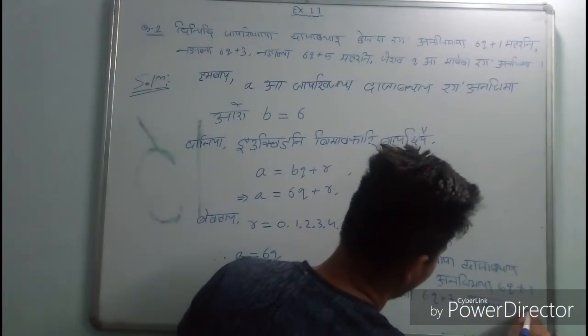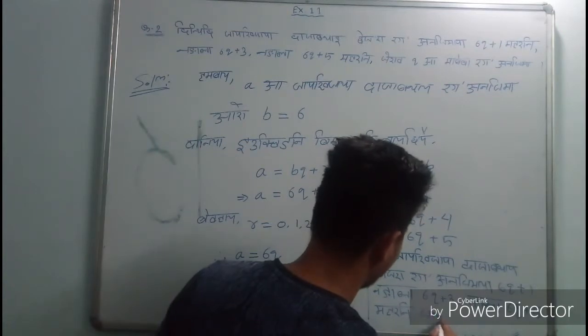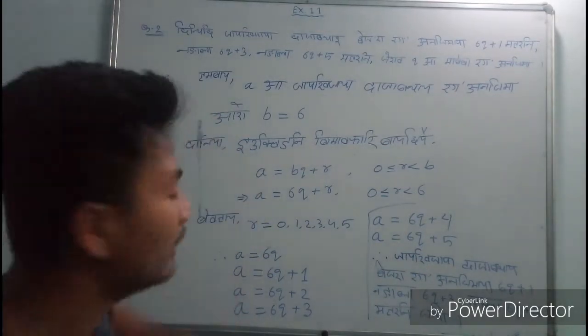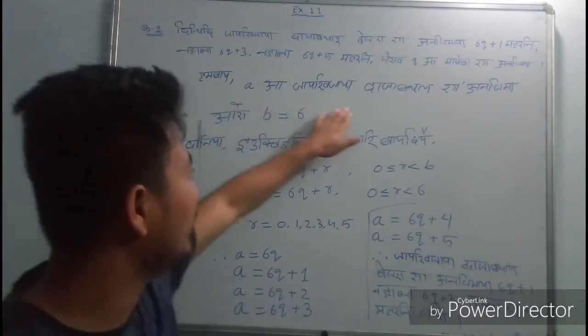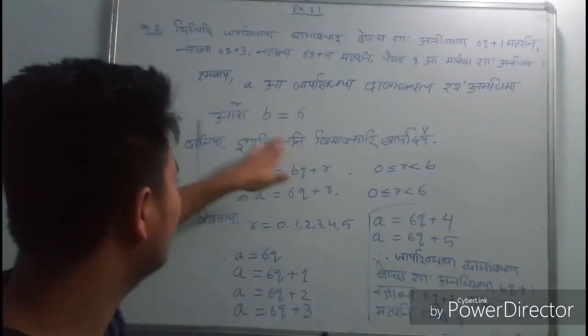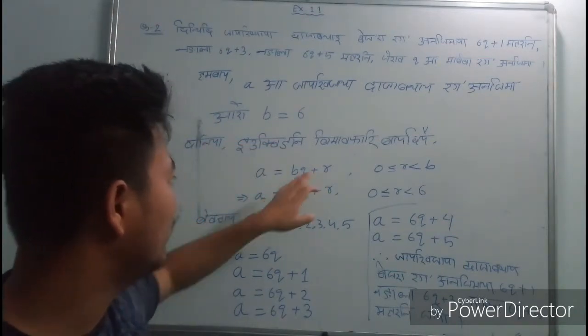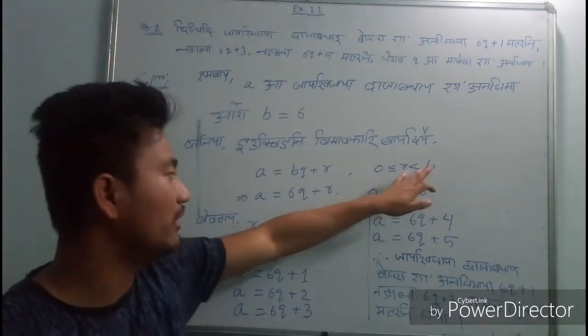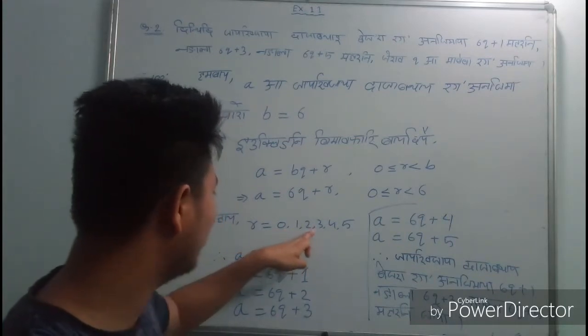Now, I will tell you that a is any integer and b is equal to 6. We will have a equals bq plus r. So r will have values from 0 to 5.